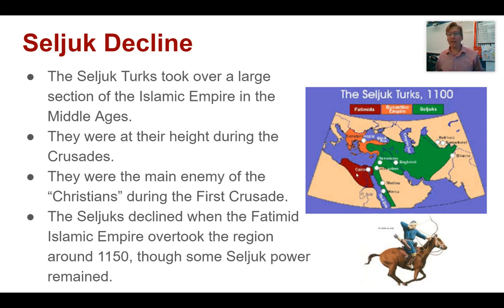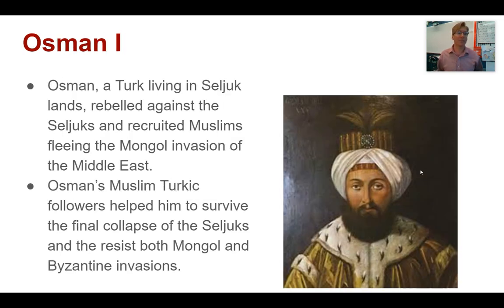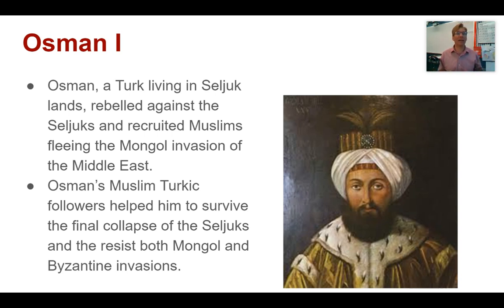The Seljuks themselves go into decline when the Fatimid Islamic Empire overtakes the region around 1150. The Fatimids take over in North Africa, start to push and pressure the Seljuks, and they start to weaken. They're feeling vulnerable, and this is going to be a problem for the Seljuks and a bit of relief for the Byzantines. As the Seljuks are starting to collapse, Osman, who is a Turk living in the Seljuk lands, rebelled against Seljuk rule — the dominant power of his region.